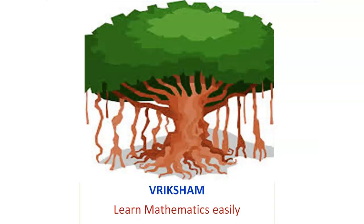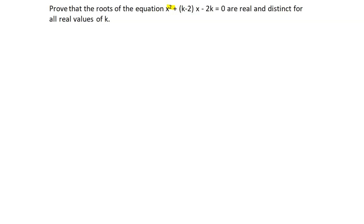Hi viewers, welcome to Brixham channel. Learn mathematics easily. Here we are going to answer the question: prove that the roots of the equation x² + (k - 2)x - 2k = 0 are real and distinct for all real values of k.